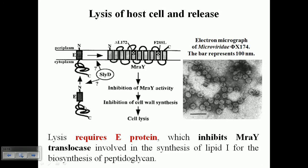Finally, it requires to lyse the host cell and come out. For lysis of the host cell, the bacteriophage requires another protein expression — protein E. Expression of protein E actually inhibits the MraY translocase enzyme, which is involved in the synthesis of lipid I in the biosynthesis of peptidoglycan.